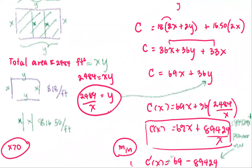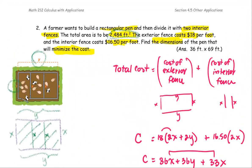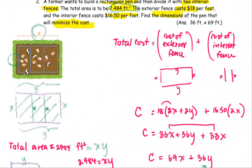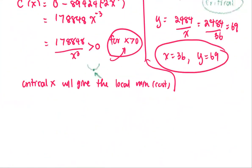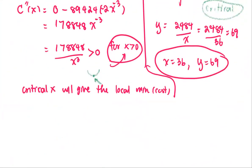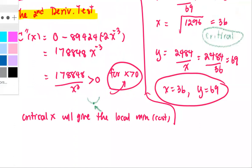The problem asks for the dimensions that minimize the cost, not the cost itself, so we are done. The answer is 36 feet by 69 feet.